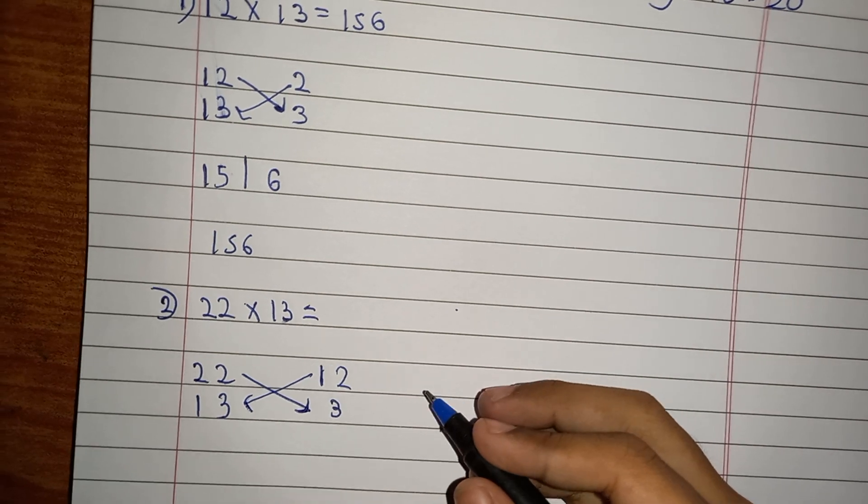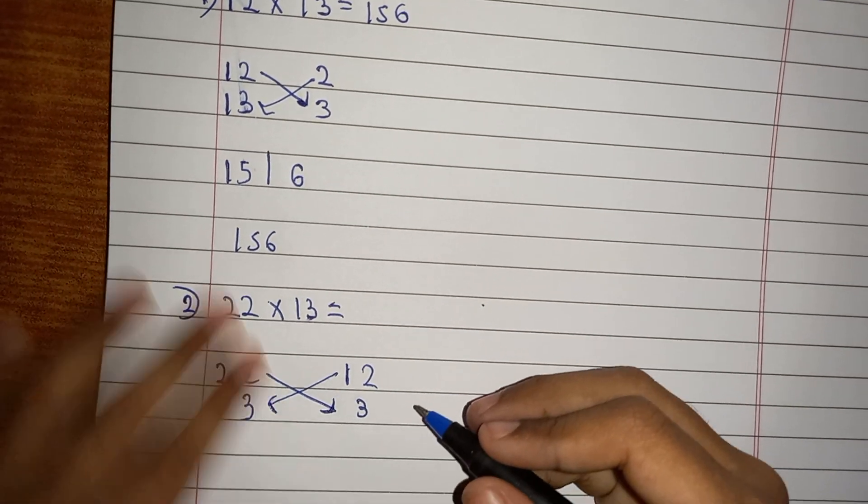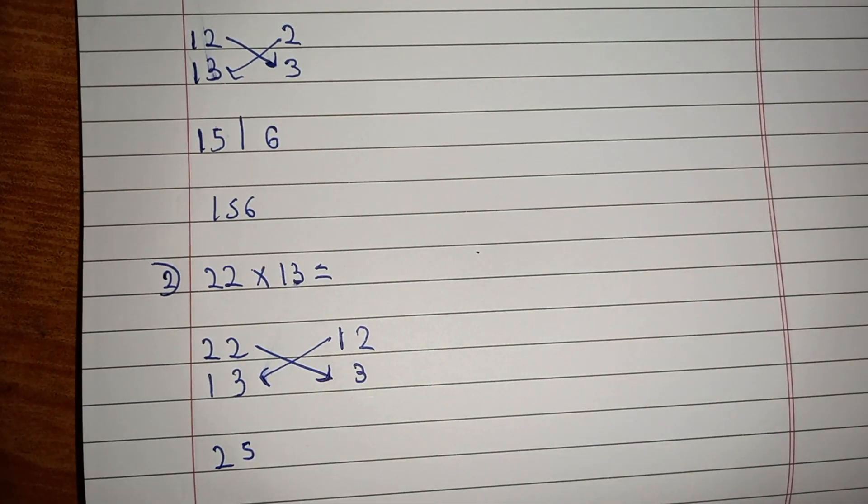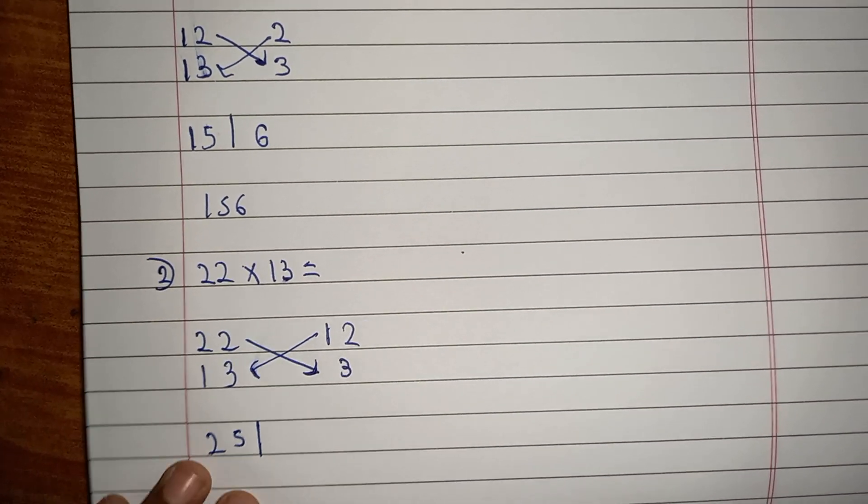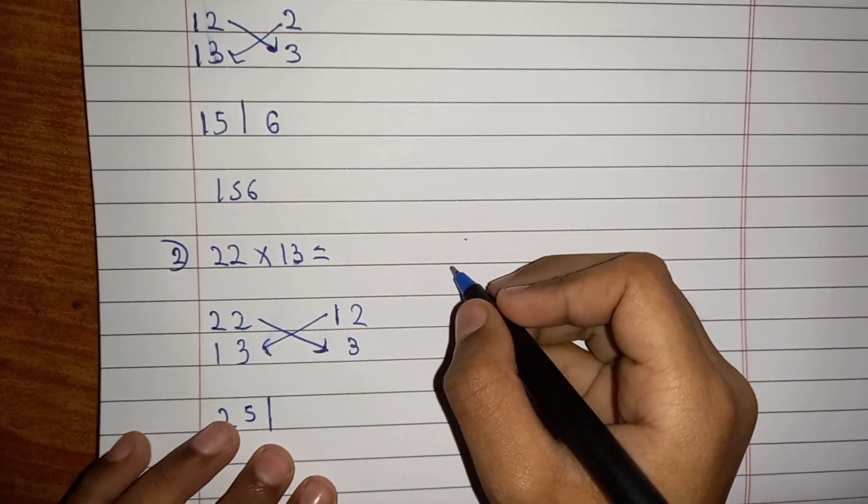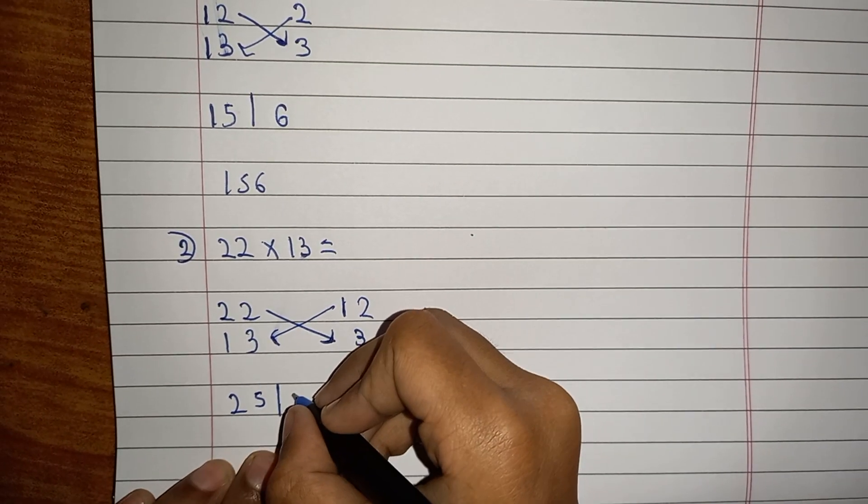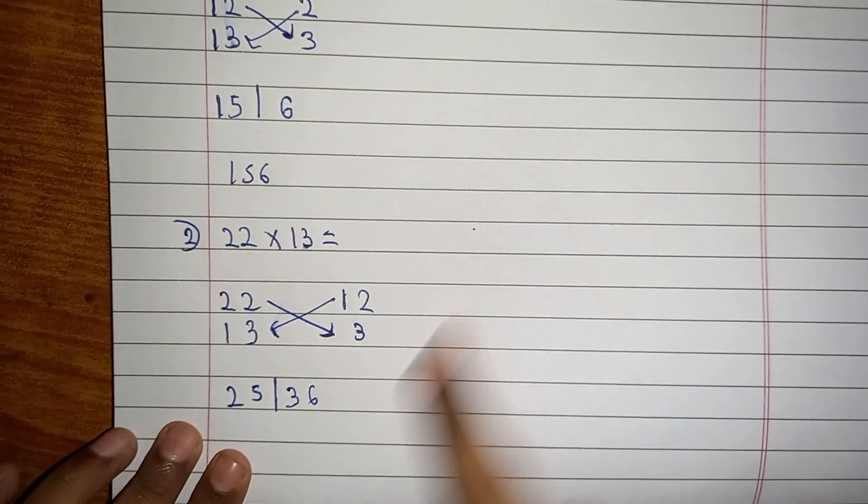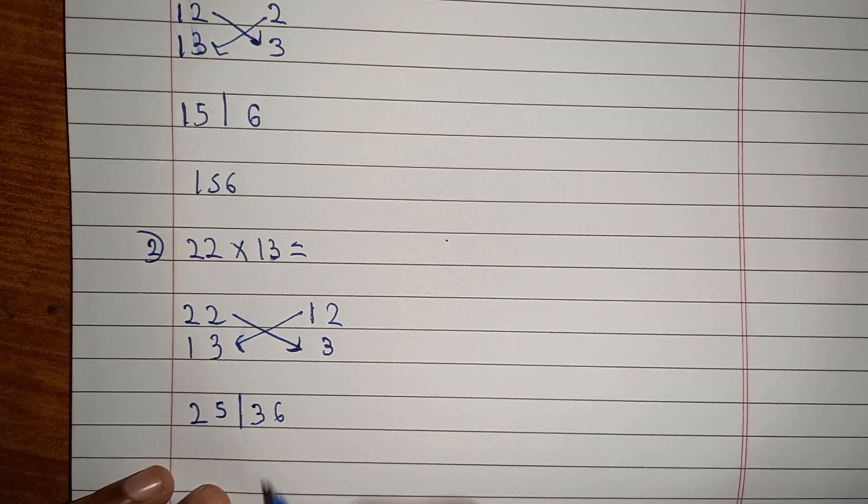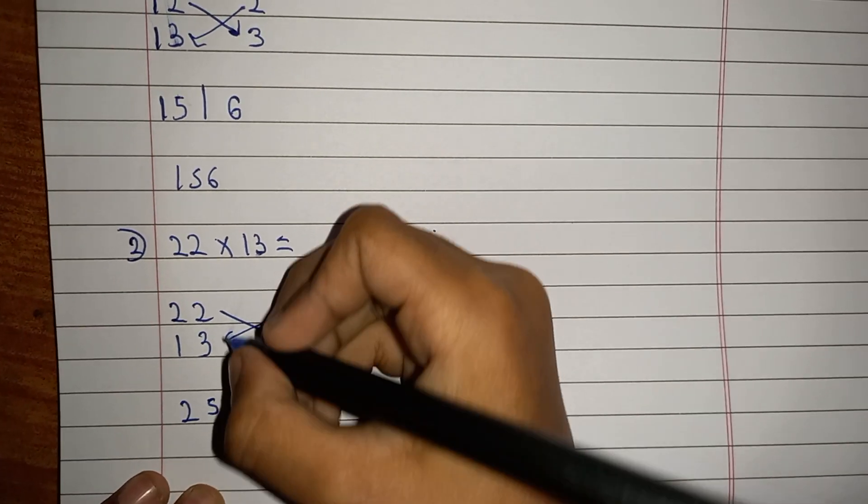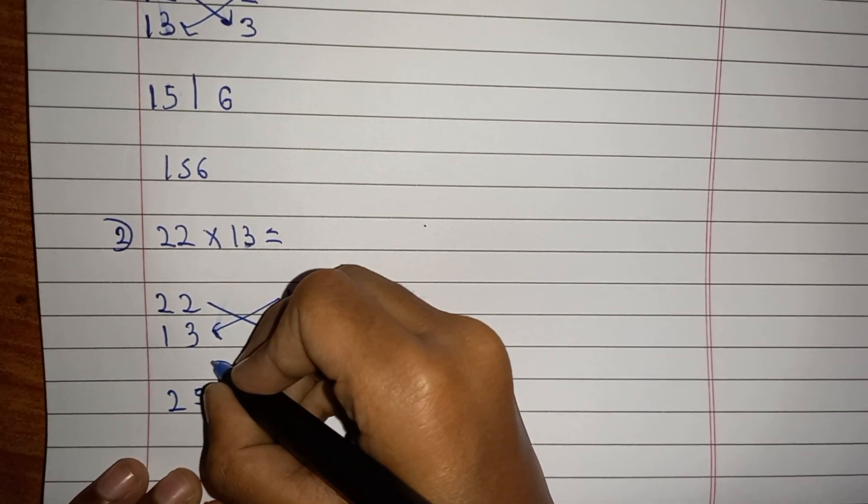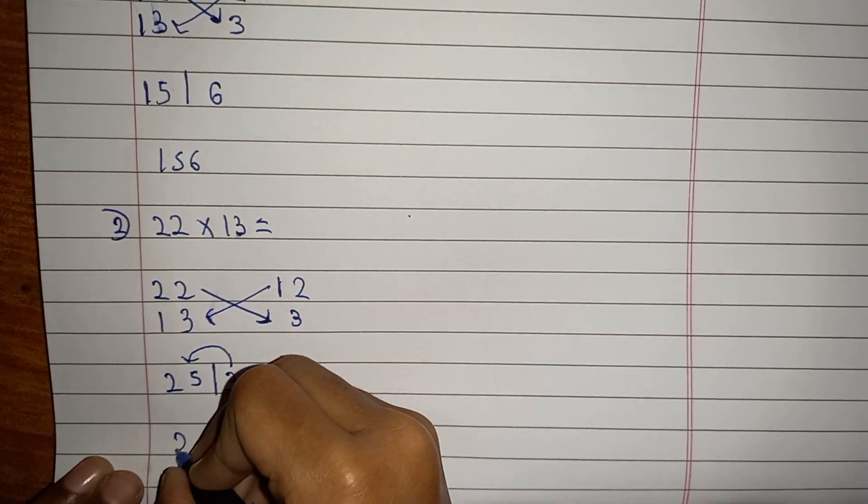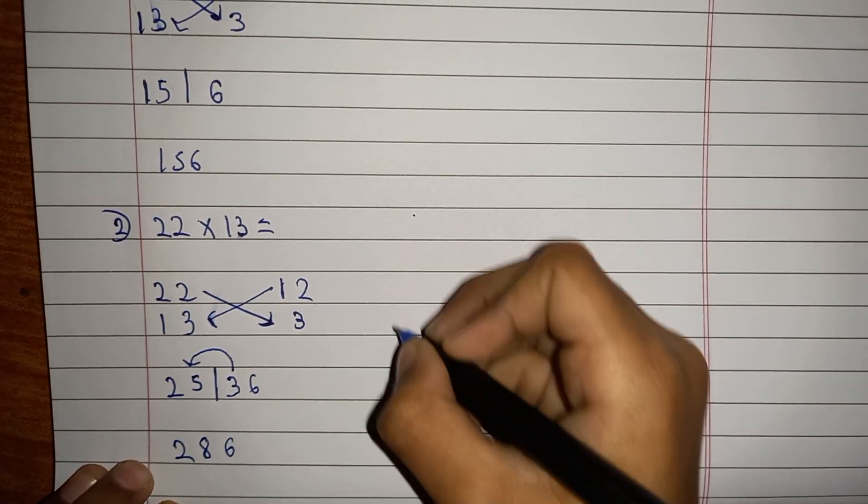13 plus 12 or 22 plus 3, you'll get the same answer which is 25. Then keep a line. Then 12 times 3 is 36, so write 36. But this time you'll get 2 digits, but there should be only 1 digit. So you have to take the 3 and give it to 5. The answer you'll get is 286, so the answer is 286.